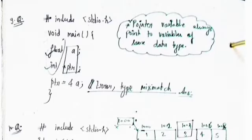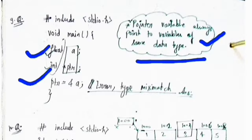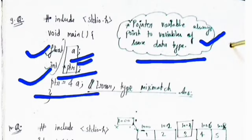Question 9 includes stdio.h with void main, float a, and int pointer ptr where ptr equals &a. This program contains an error because a pointer variable must always point to a variable of the same data type. Here the data type is float but the pointer is int, creating a type mismatch or data type mismatch error.